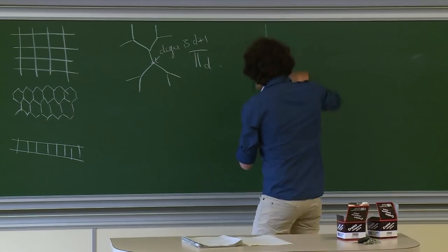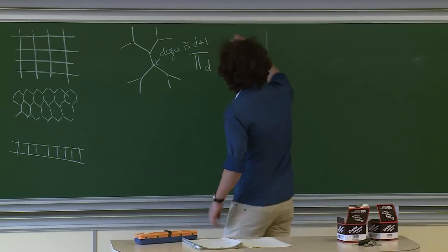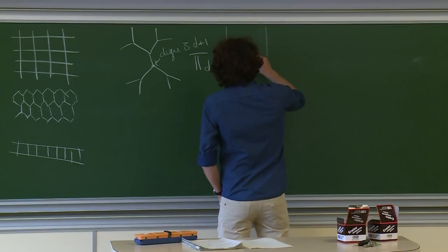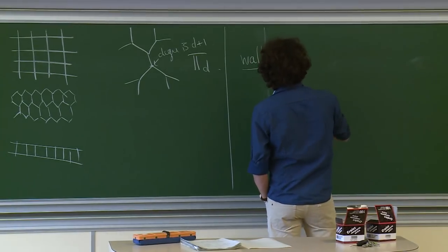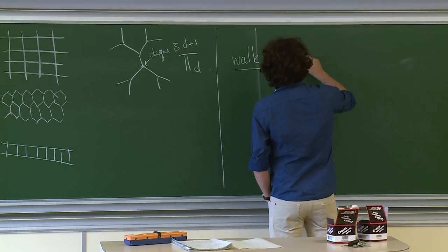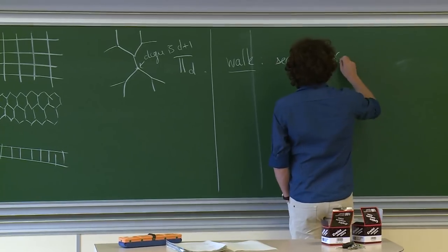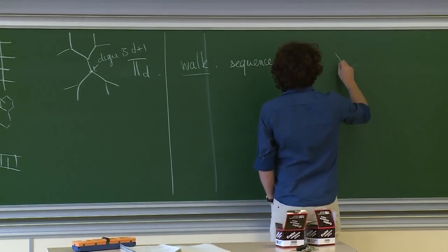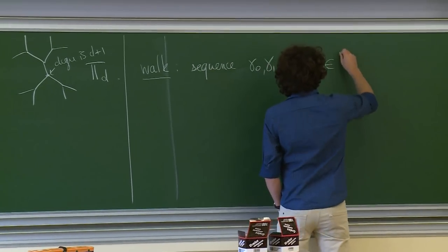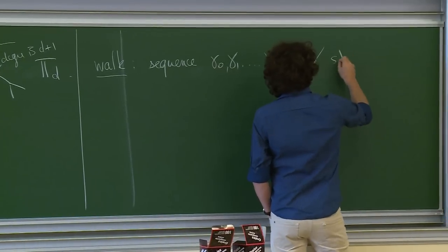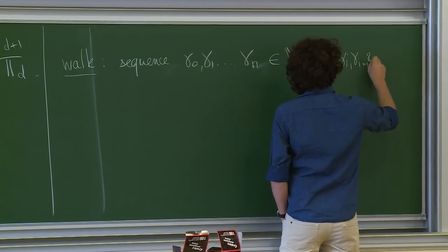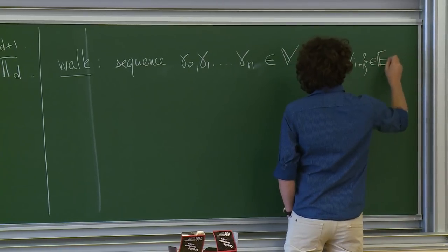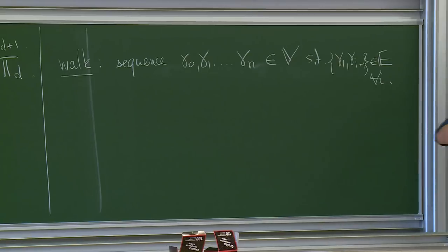The first object is a walk: just a sequence γ_0, γ_1, …, γ_n in V such that (γ_i, γ_{i+1}) is an edge for every i. So it's a sequence of neighboring vertices.